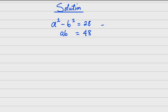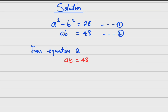These are the two equations: this is equation one and this is equation two. Now, I'm choosing equation two because it is simpler compared to equation one. From equation two, I'm going to make one variable the subject of the formula. Equation two is a × b = 48, so a = 48 / b.